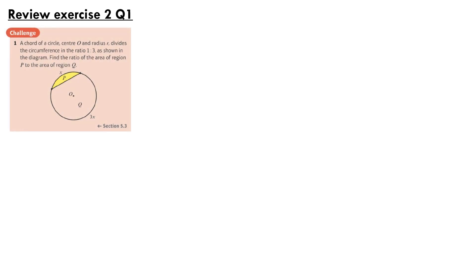For question 1, a chord of a circle, centre O and radius R, divides the circumference in the ratio 1 to 3, as shown in the diagram. Find the ratio of the area of the region P to the area of the region Q.